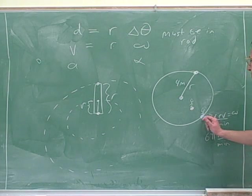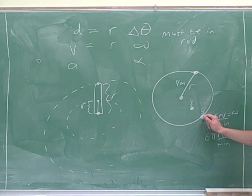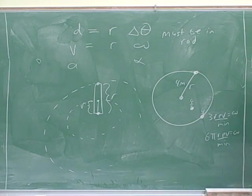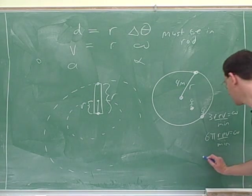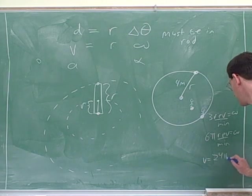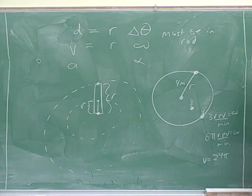So let's figure out what V would be for this person here on the edge. How would we calculate V for this person? What calculation do we need to do? Multiply omega by 4. Yeah, and what would we get? 24 pi. And what units would that come out in? That would be radians per minute. Or would it be revolutions per minute? Because that's what we have there.